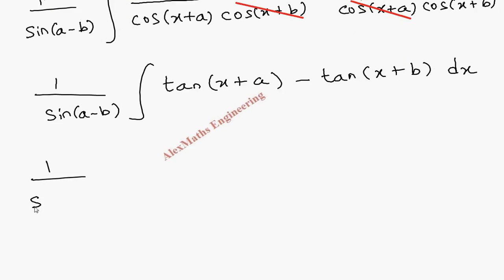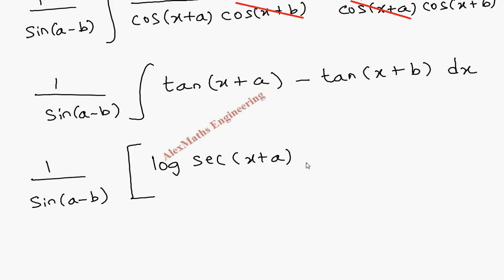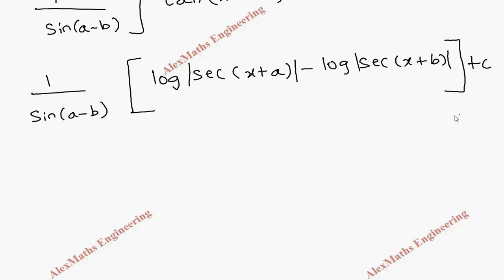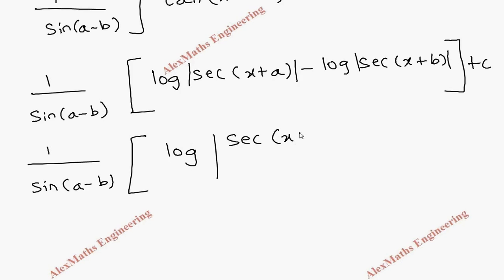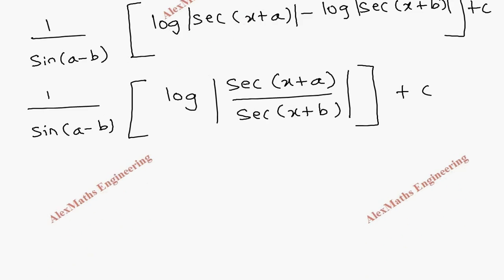Now we apply the integration formula. Outside 1/sin(a-b) is written as it is. The integration of tan gives log|sec|, so we get log|sec(x+a)| minus log|sec(x+b)|. We write a modulus inside the log. Applying the log rule — log A minus log B equals log(A/B) — we get log|sec(x+a) / sec(x+b)|.